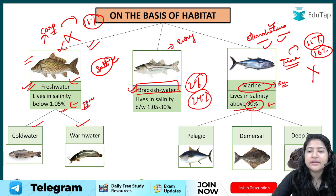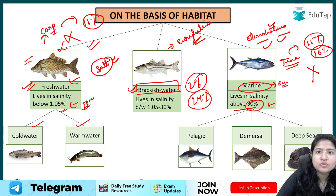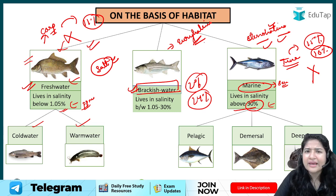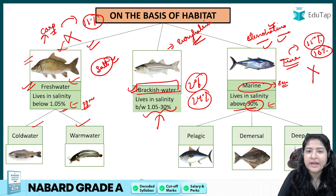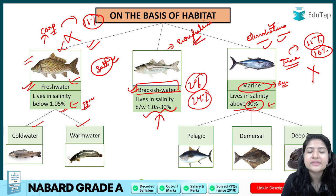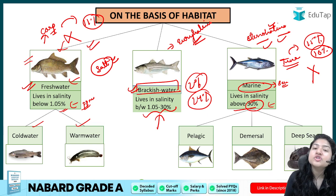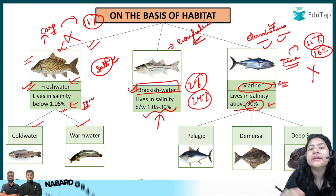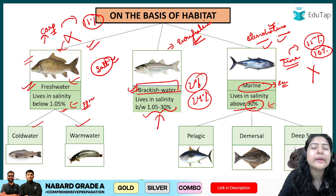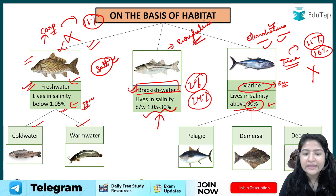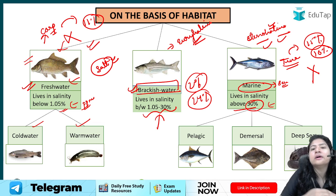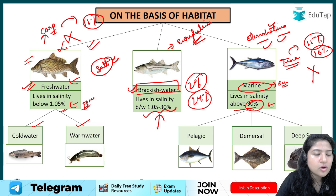Brackish water fishes, on the other hand, are euryhaline — they can adapt to a wide range of salt concentrations. This makes sense because brackish water itself spans a wide salinity range, so the fishes living there must be adaptable to survive. In summary: fresh water and marine water fishes are stenohaline, while brackish water fishes are euryhaline.